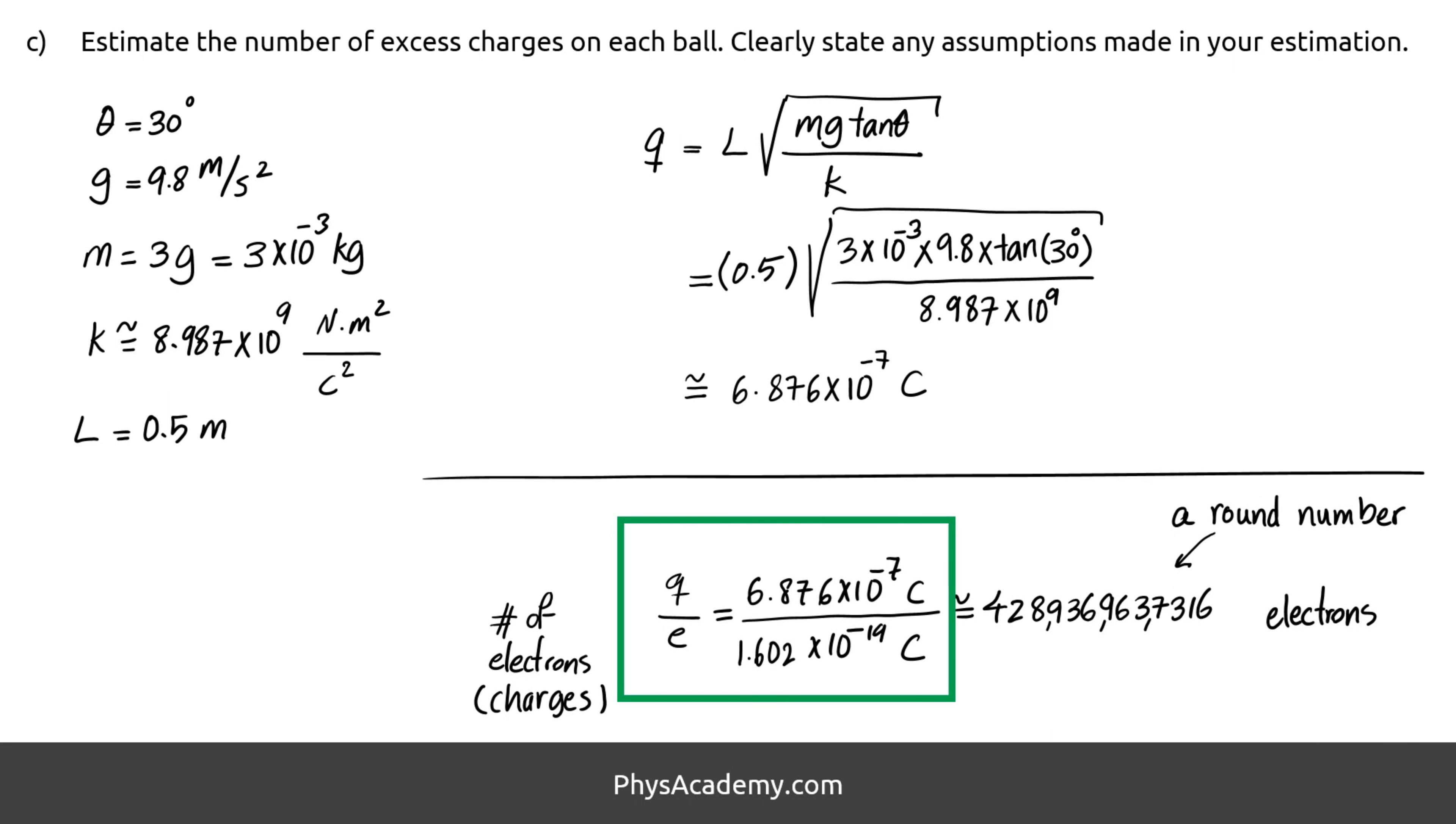To find the total number of the charges, we divide this total amount of charge by the charge of a single electron or proton, which is 1.602 times 10 to the negative 19.